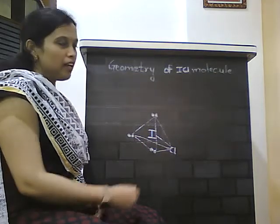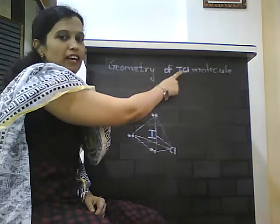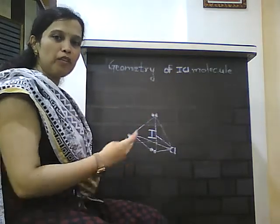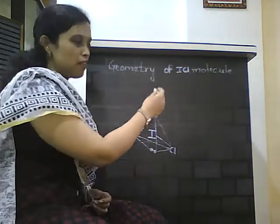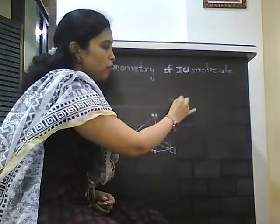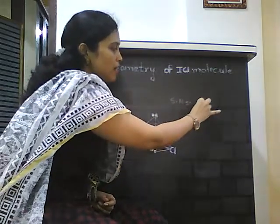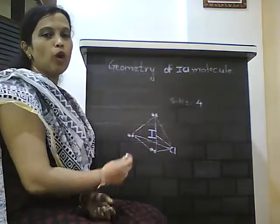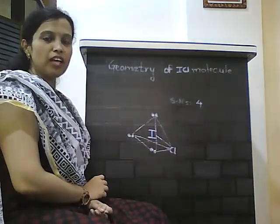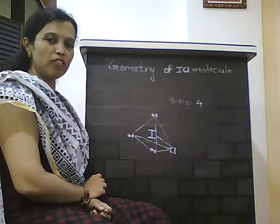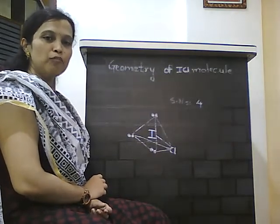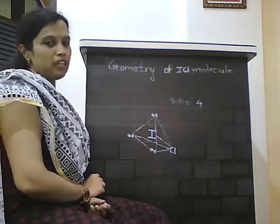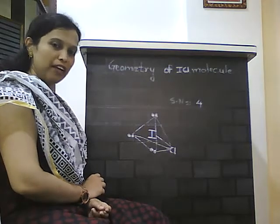Now we will see the example of ICL molecules. In the previous video, we saw that steric number for ICL molecules is 4. Therefore, on the basis of valence shell electron pair repulsion theory, steric number 4 predicts the tetrahedral geometry.